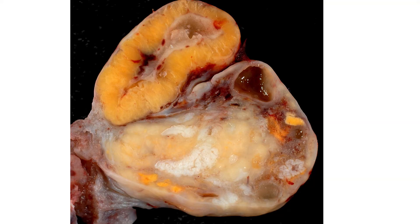Following ovulation, ovarian follicles undergo reorganization and form a corpus luteum, pictured here grossly. These look yellow due to their high lipid content. They are absorbed deeper into the ovary, form a clot, and blood vessels from the theca interna invade it, so it becomes vascularized and secretes hormones.